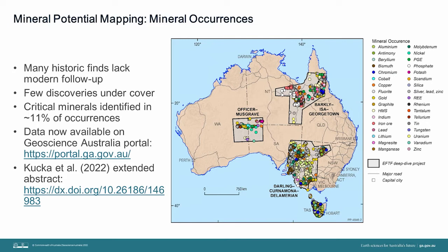I'm pleased to announce that the mineral occurrence datasets for each of the three deep-dive areas are now available on the Geoscience Australia portal. The compilation shows that critical minerals are found in about 10% of occurrences in the Barclayser-Georgetown deep-dive area and also the Darling-Kernemona-Delomerian area, whereas in the Officer Musgrave deep-dive area, about 70% of the occurrences contain critical minerals. Tungsten, Antimony, Heavy Mineral Sands and Cobalt make up the majority of known critical mineral instances across the three deep-dive areas.